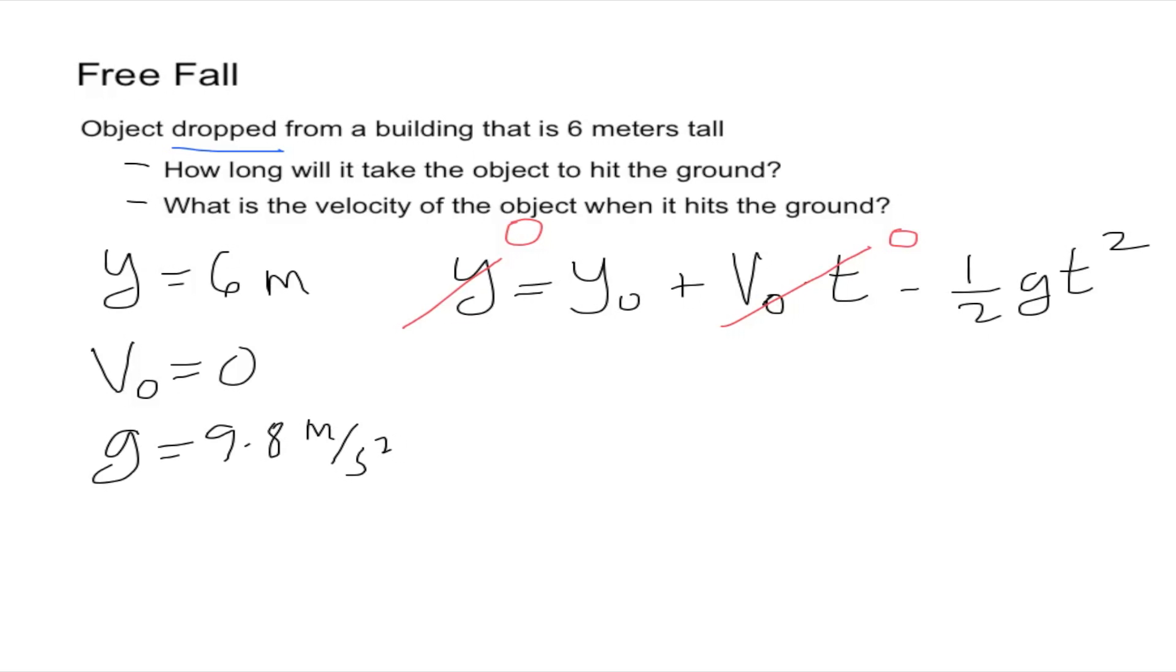We can rearrange this equation and get that one-half g t squared is equal to y naught. So now we want to rearrange to only get t so the two, the one-half goes multiplying to the other side. So we'll get that t is equal to the square root of 2y naught over g.